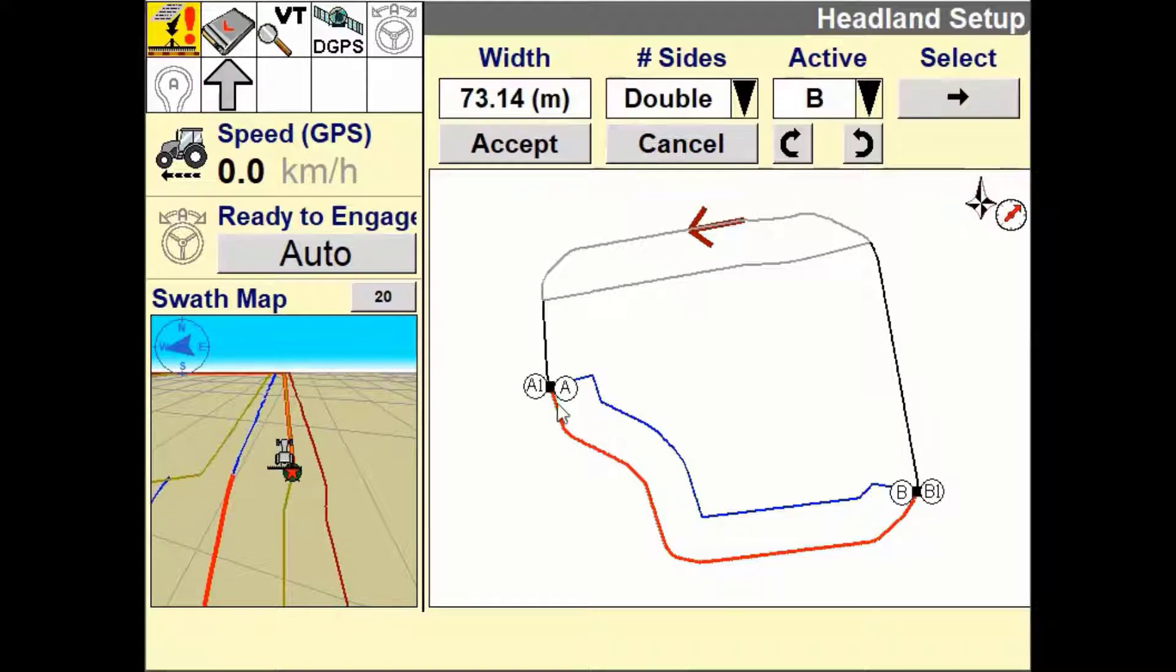There are two ways to move these points. First select the active point you wish to move then press the map screen where you wish to move this point to.